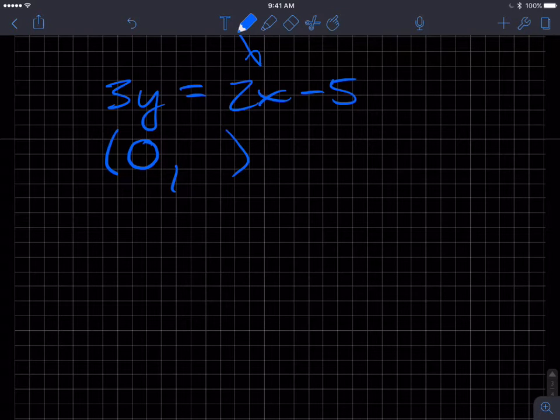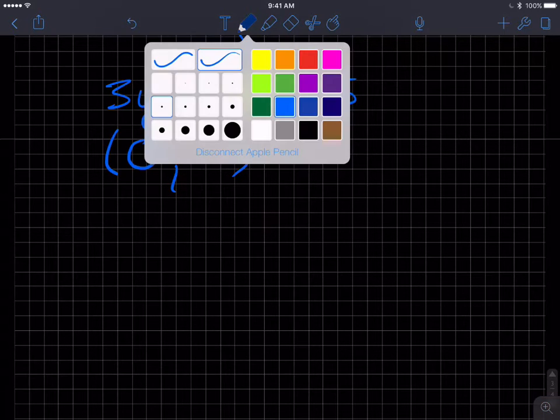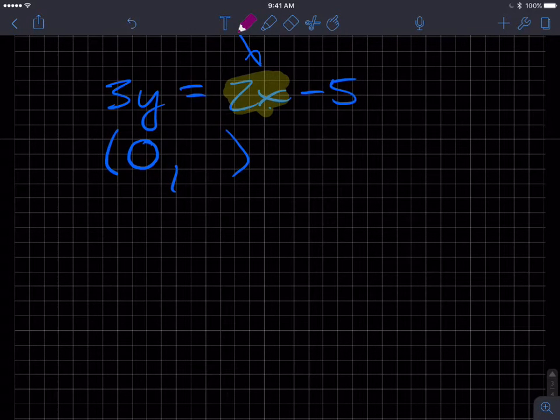An easy number to substitute and get the y that maps to it is x equals 0. So if I put a 0 in for x, what happens to that term? It goes to 0, correct. And so what do we get for our y value? We get negative 5 thirds, because I'm going to divide both sides by 3. That's gone, and so I have negative 5 thirds.